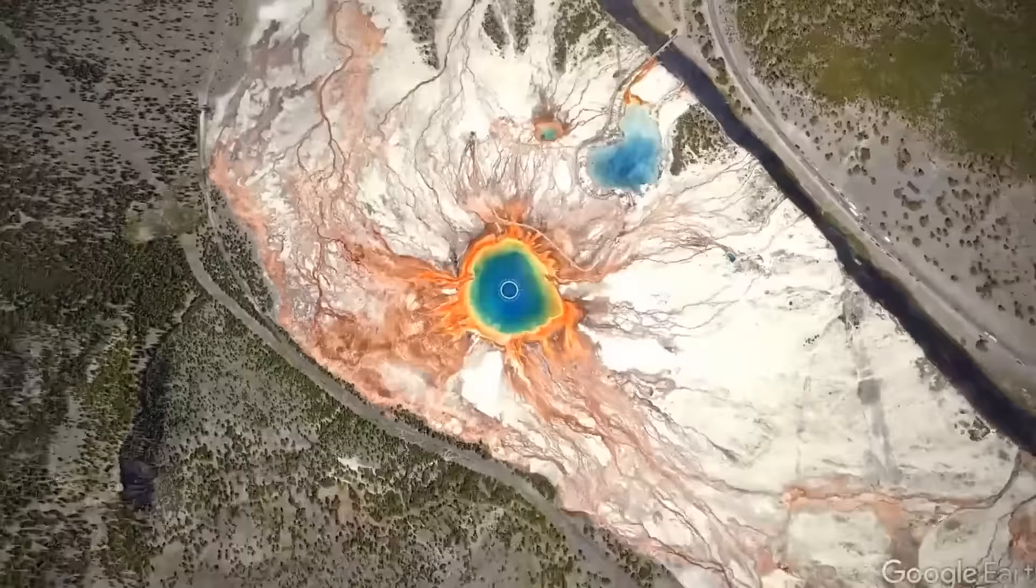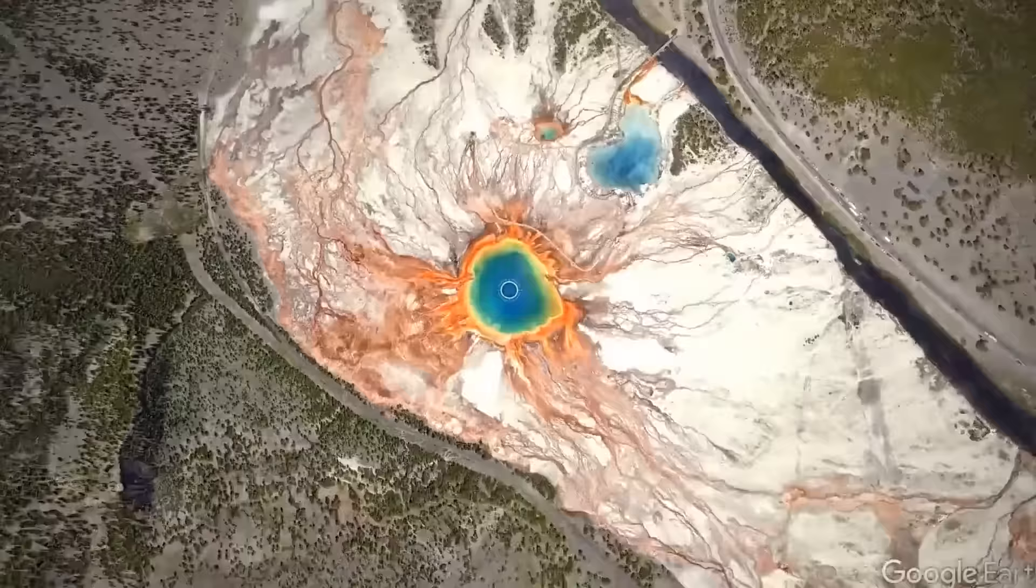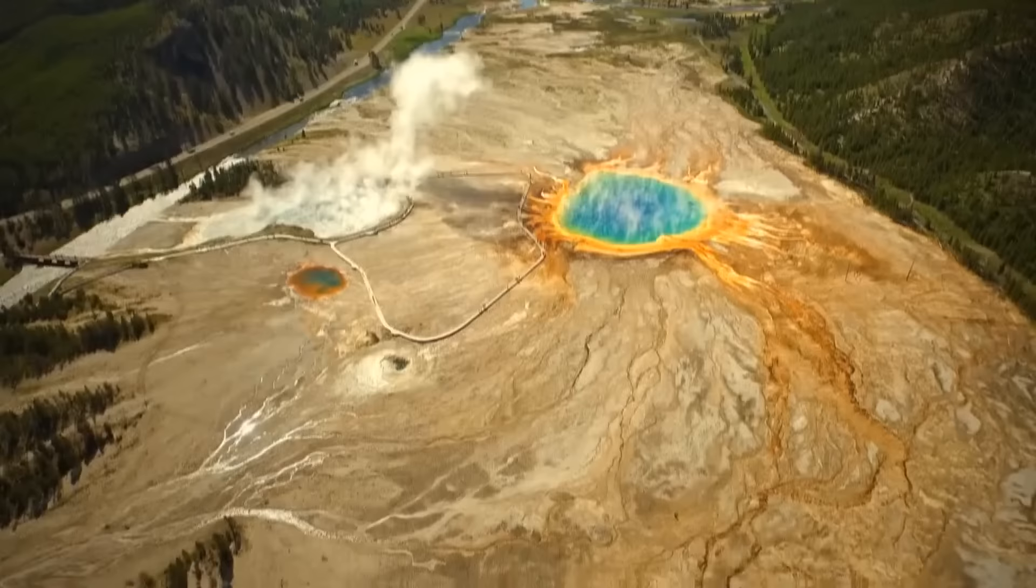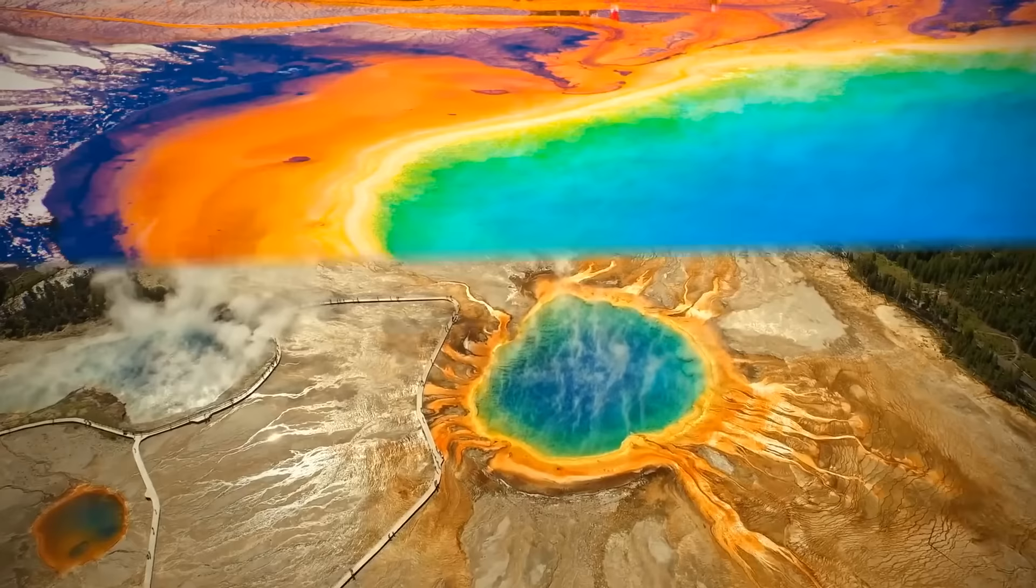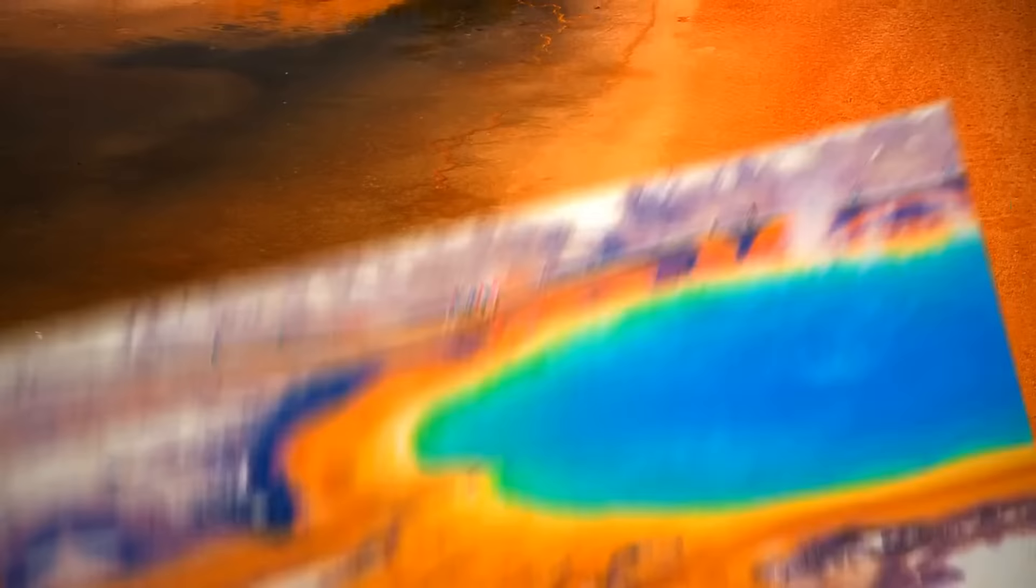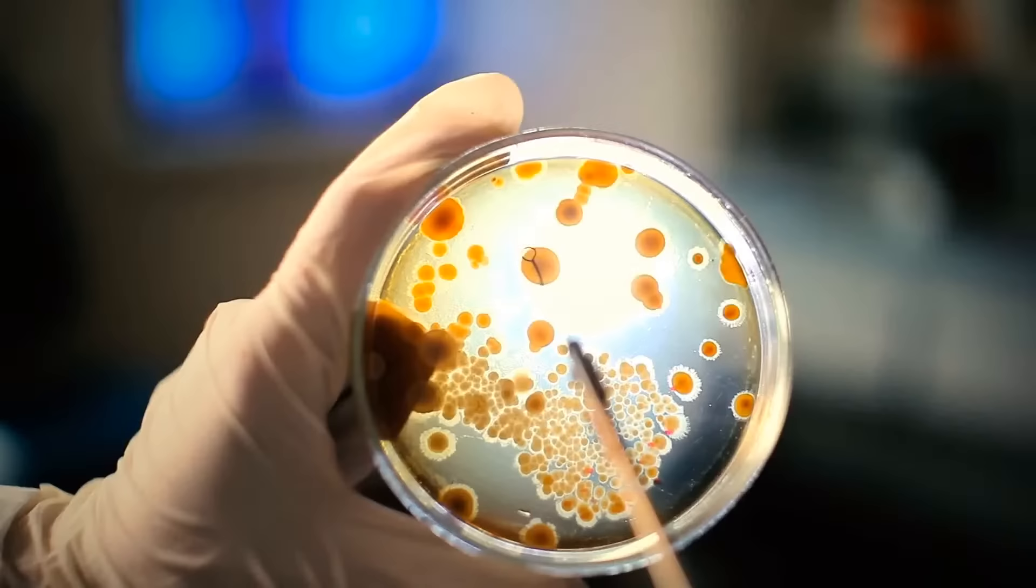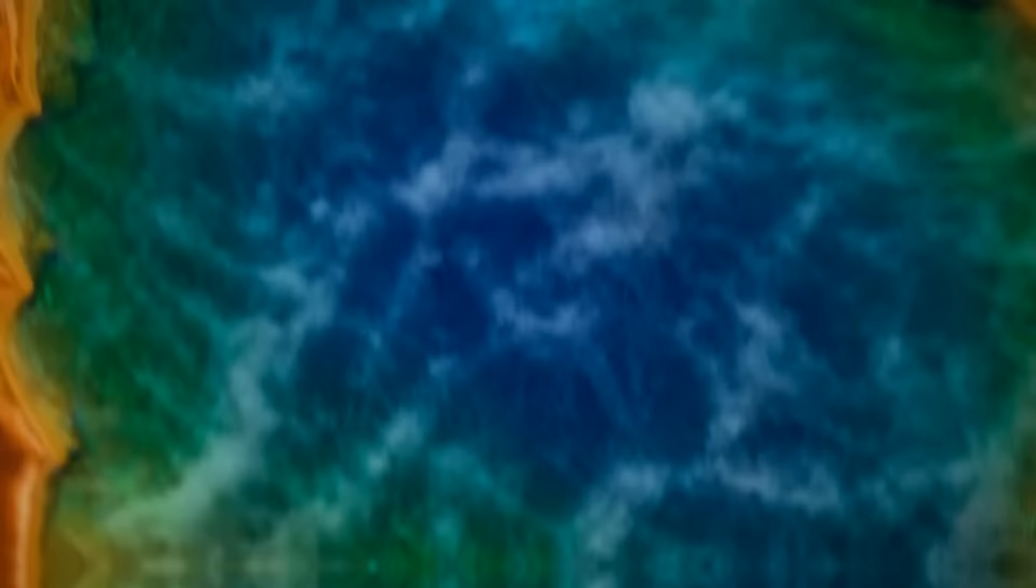While not as popular as Old Faithful, the Grand Prismatic Spring in Yellowstone Park, Wyoming, is one of the most spectacular sights to see, even from ground level. But from above, the bright bands of orange, yellow, and green really start showing their beauty. It's one of the biggest springs in the world, larger than a football field at 370 feet across. The hot water in it travels 121 feet to the surface. The spring is a feeding ground for heat-loving bacteria that change their color in the cooler water.